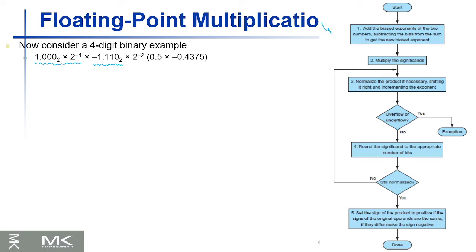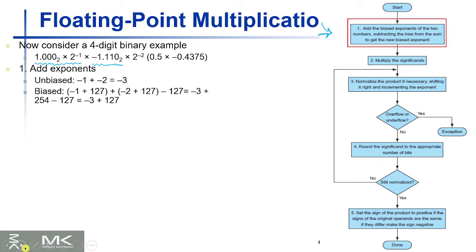Here is the algorithm we're going to follow. The first step is to add the exponents. Just like multiplying 10 to the power of 1 by 20 times 10 to the power of 30 gives 20 times 10 to the power of 31, we're going to do the same with binary — we add up the binary exponents: minus one and minus two.